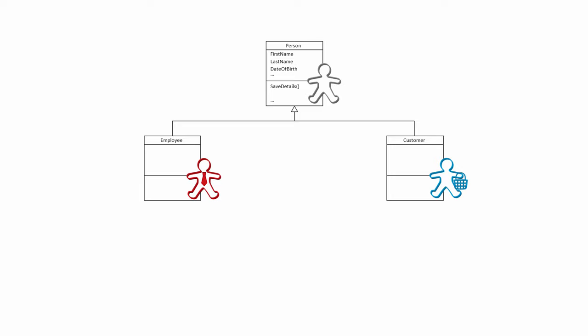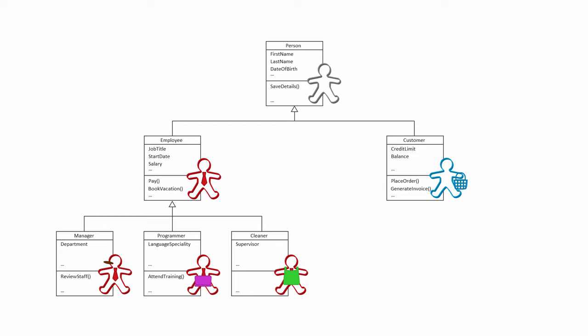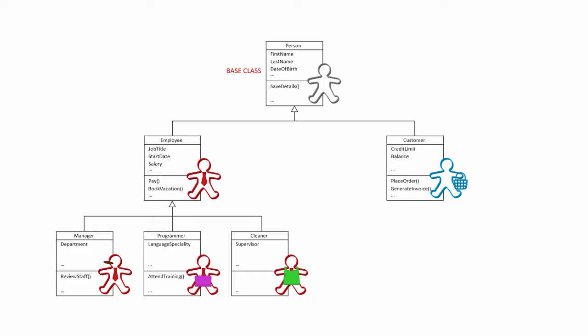An employee class can have some extra properties and methods of its own — it can extend the person class, and so can a customer. But it need not stop there. A programmer is a type of employee, and so is a manager and a cleaner. Inheritance defines type-of relationships. The class at the start of the inheritance hierarchy is called the base class. Any class that derives from another class is called a subclass. Any class that is derived from is called a superclass.